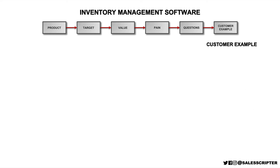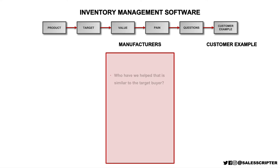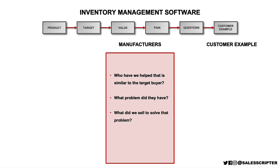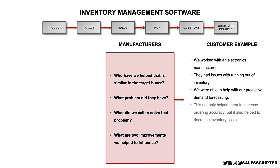The next step in the process is to think about a customer example that we can share when we're talking with prospects. Here's a four-step process you can go through to create a very concise, tight customer example for the product that you sell. Think of a customer that you helped or sold your product to that's similar to the target buyer type. Think of a problem they had before they started working with you. What did you sell them to solve that problem? And then try to think of two improvements that your product or service helped to create for that customer. Going through those four steps, I can come up with a customer example for selling inventory management software to other manufacturers.